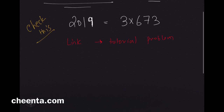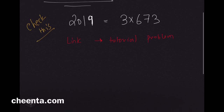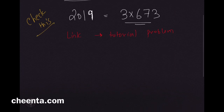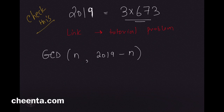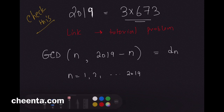So we have this number 2019 which is 3 times 673. What do we want? We want to find the GCD of n and (2019 minus n) for n equals 1 up to 2019. Call this d_n.